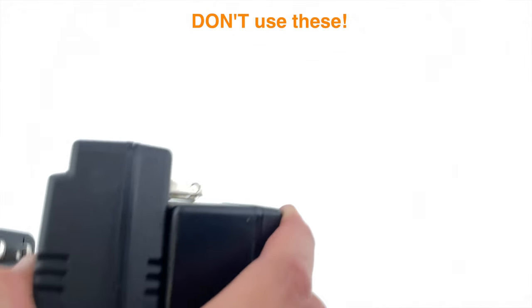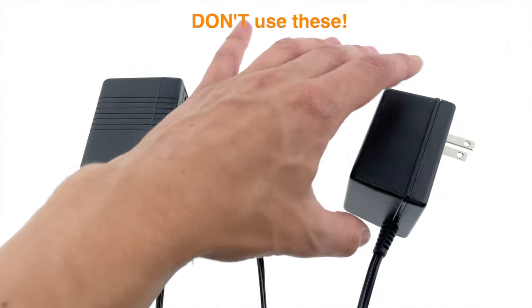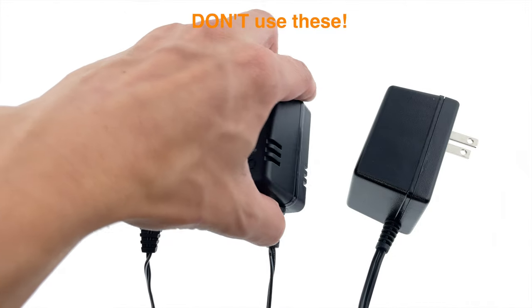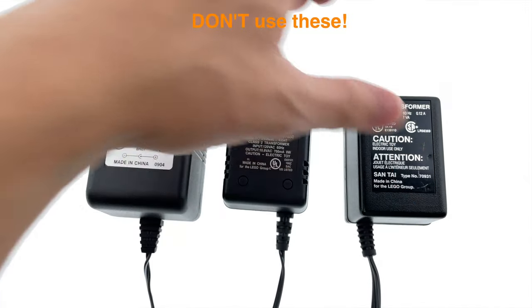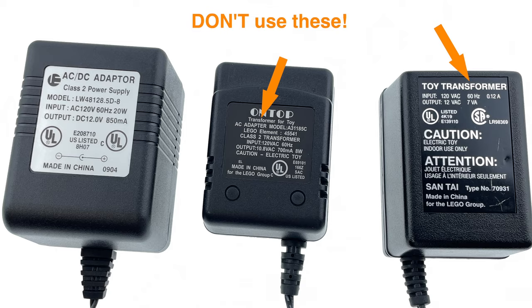I will explain why in a minute, but first let me help you find one. Here are some examples of linear power supplies. They are bulky and very heavy for their size, thanks to the big transformer they contain. Sometimes they'll even say transformer right on the nameplate.